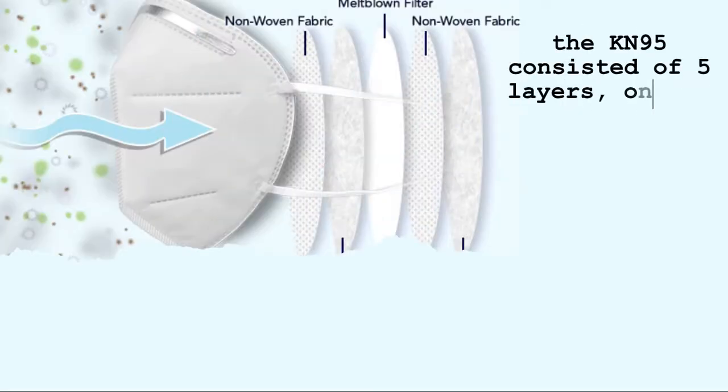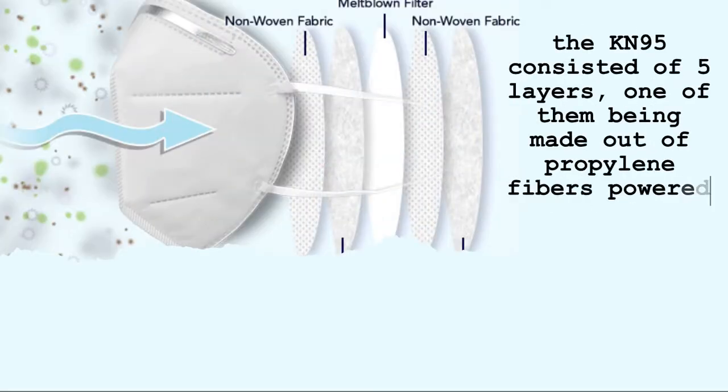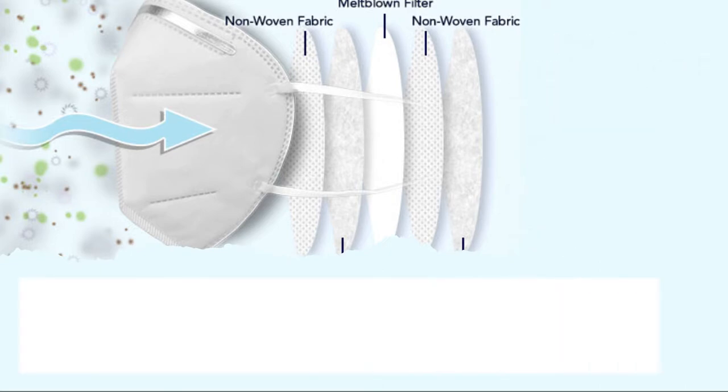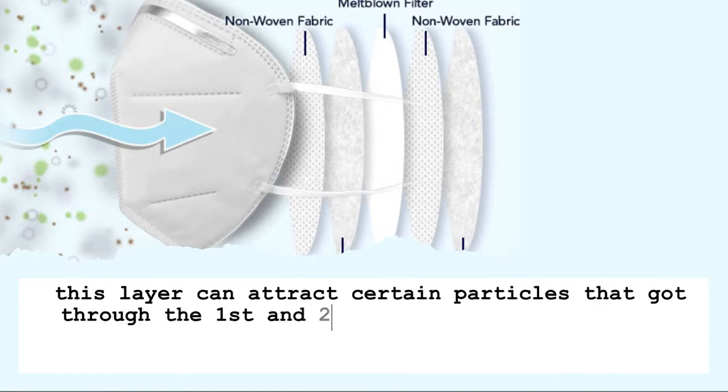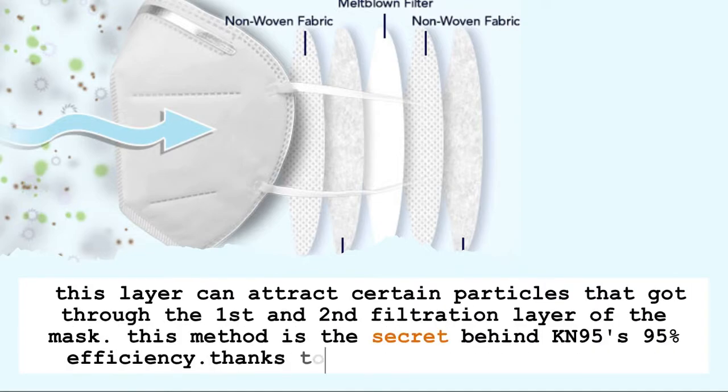The KN95 consists of five layers, one of them being made out of propylene fibers powered with electrostatic charge, also called the melt-blown fiber. This layer can attract certain particles that go through the first and second filtration layers of the mask. This method is the secret behind KN95's 95% efficiency, thanks to the electrostatic force.